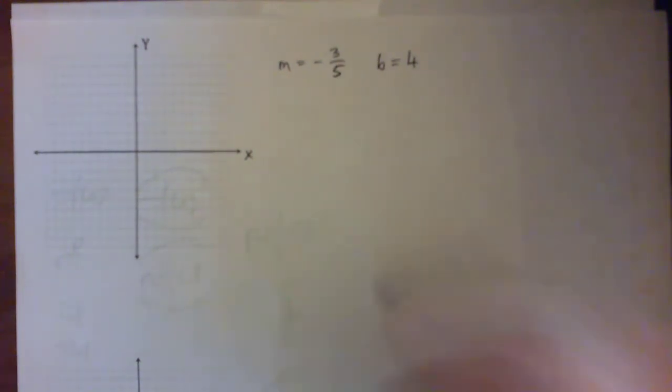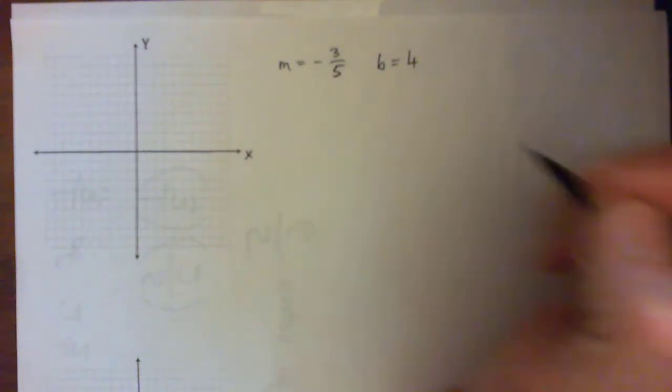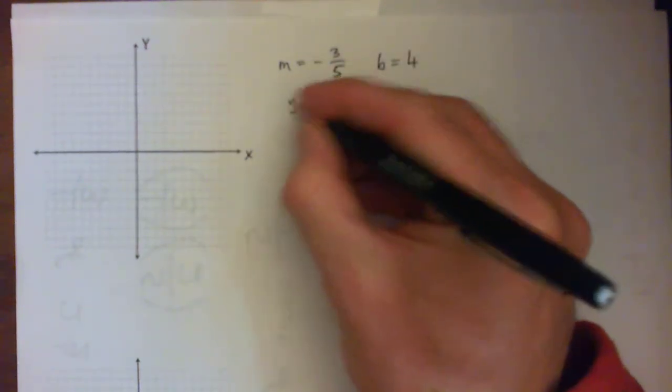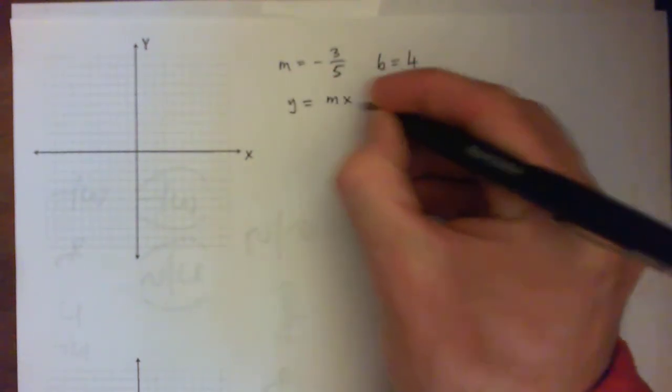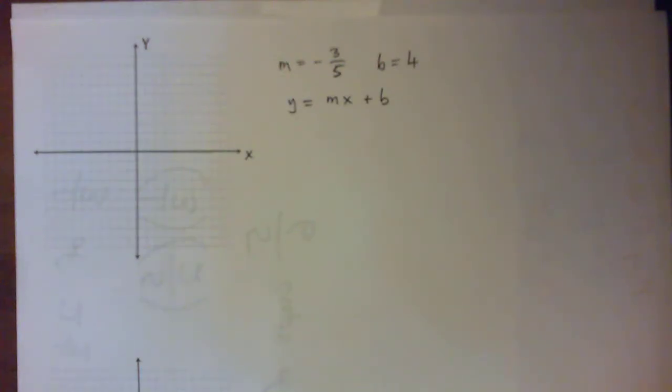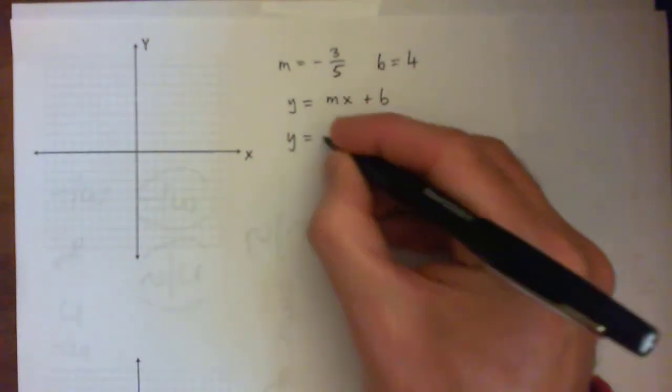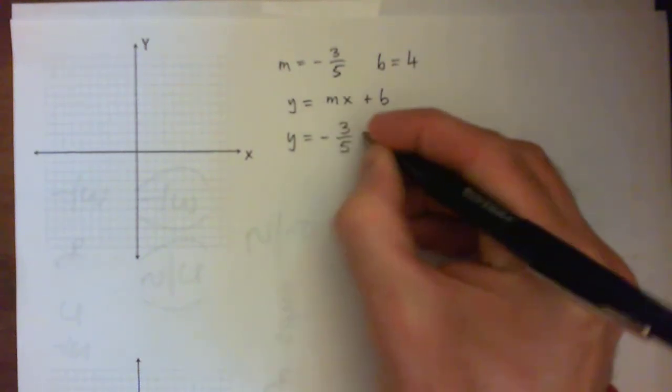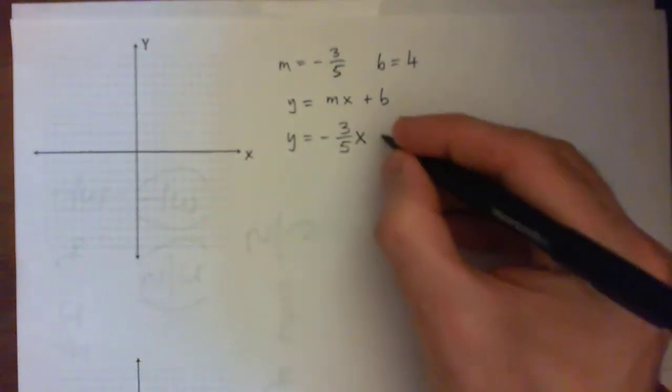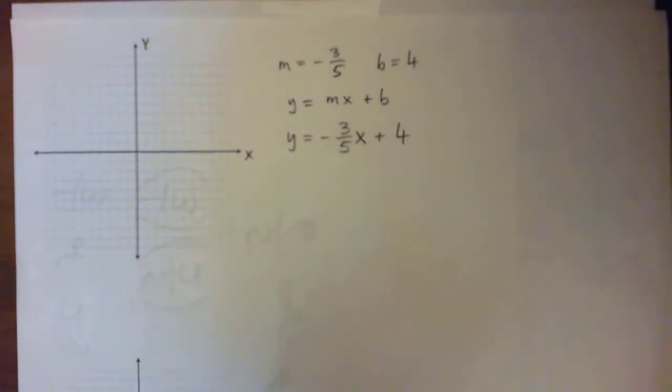Write down Y = MX + B, the standard form of our linear equation. The output equals the slope times the input plus the y-intercept. So we replace M with -3/5 and write Y = -3/5 X + 4.